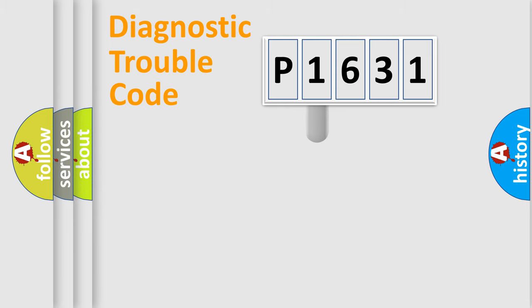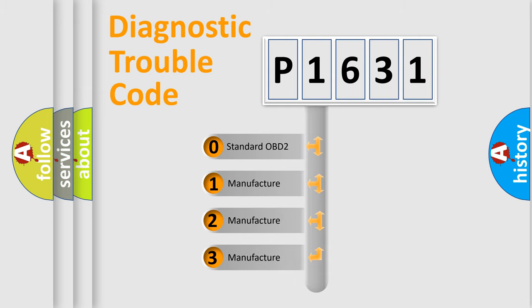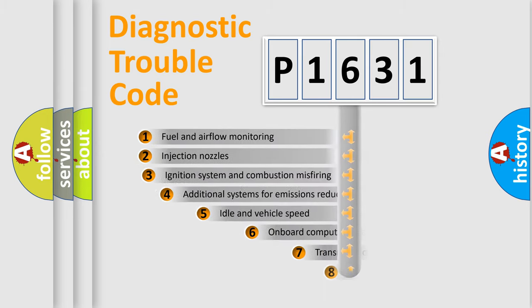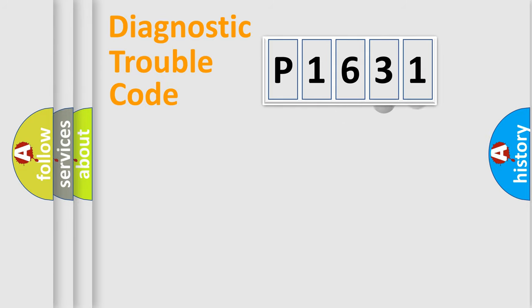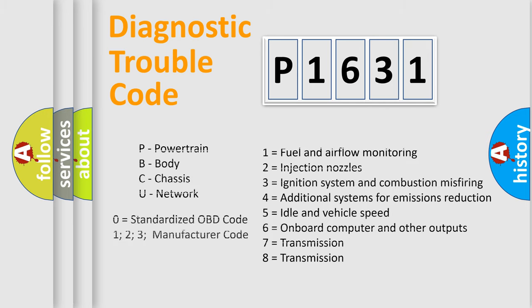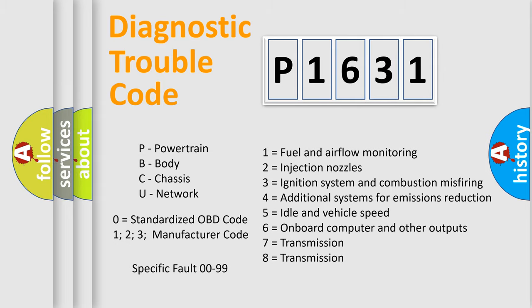This distribution is defined in the first character of the code. If the second character is expressed as zero, it is a standardized error. In the case of numbers 1, 2, or 3, it is a more specific expression of a car-specific error. The third character specifies a subset of errors. The distribution shown is valid only for the standardized DTC code. Only the last two characters define the specific fault of the group. This division is valid only if the second character is expressed by the number zero.